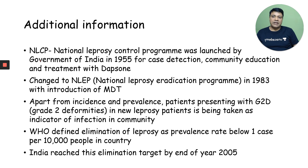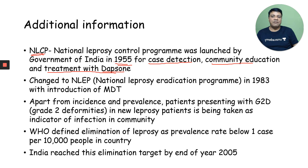The Government of India started the National Leprosy Control Program in 1955 for case detection, community education, and treatment with Dapsone. So treatment with Dapsone was started in 1955. Later, it was changed to the National Leprosy Eradication Program in 1983 with the introduction of multi-drug therapy. So multi-drug therapy was started in 1983.